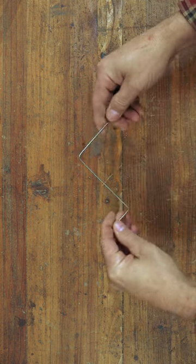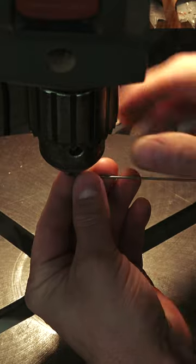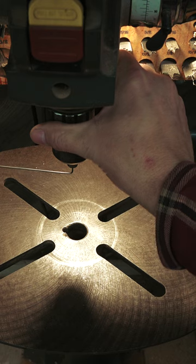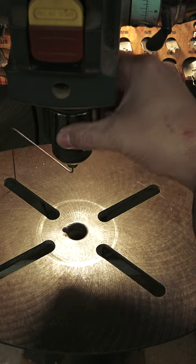One method I've seen is to take a wire and create a Z with it. You'll put one end in the chuck and check to see if it hits all four quadrants of your drill press table on the same plane. This works.